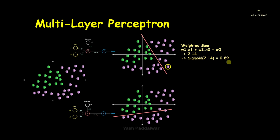The sigmoid activation function generates a value between 0 and 1. If the value is above 0.5, the data point lies in one class; if less than 0.5, it lies in the other class. For this case we get 0.89, so this data point lies in the positive class. However, we cannot rely on this output because the classifier is not fully separating the two data classes.